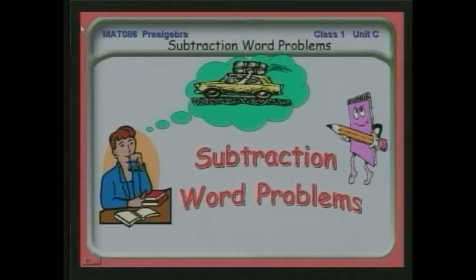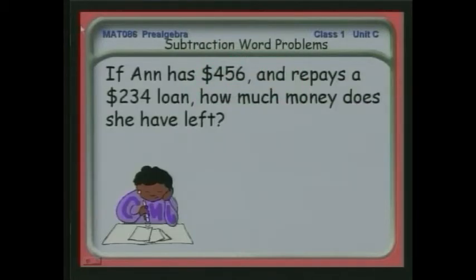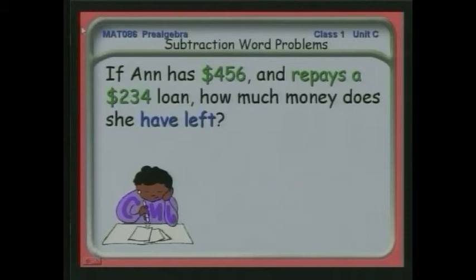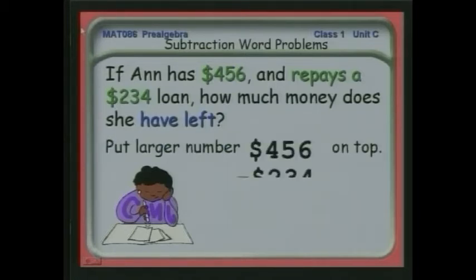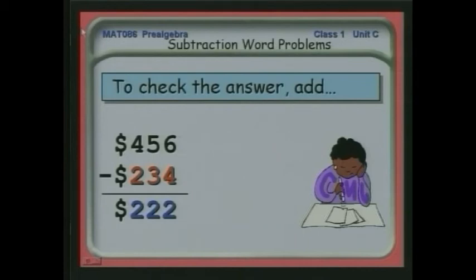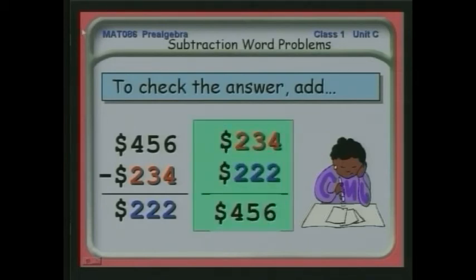Let's look at how subtraction is used in word problems. If Ann has $456 and repays a $234 loan, how much does she have left? We identify the total ($456) and the amount repaid ($234), place the larger number on top, and subtract: 6 minus 4 is 2, 5 minus 3 is 2, and 4 minus 2 is 2. So she has $222 left. We check by adding $222 plus $234 to confirm we get $456, and it checks out.